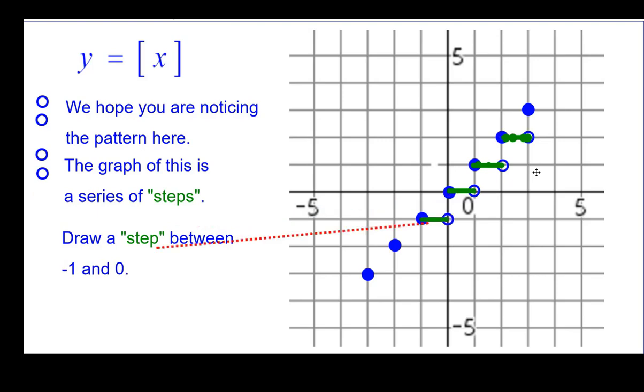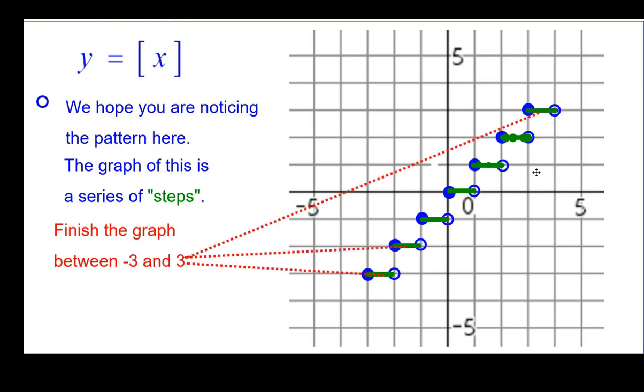So step between 0 and 1 would look like this with an open circle at the end. Between negative 1 and 0, another step. And so we can finish the graph. There. So pause is needed. That's what the greatest integer function looks like. It's also known as the step function. Surprise, surprise.